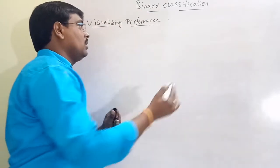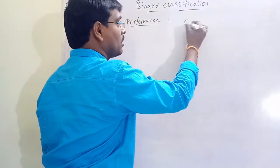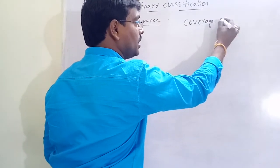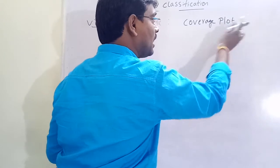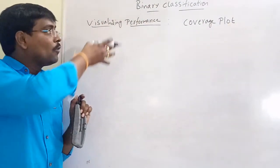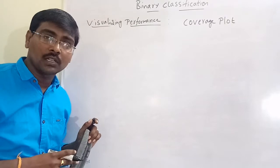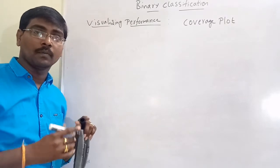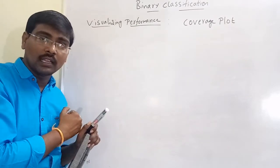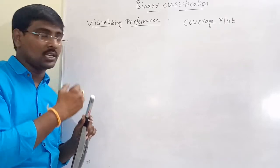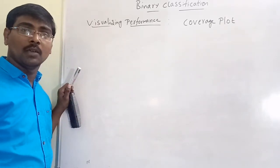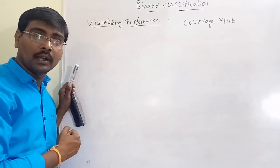These graphs are coverage plots. By using coverage plots, we are visualizing the performance of the classifier. To calculate accuracy, we need a contingency table or a confusion matrix.